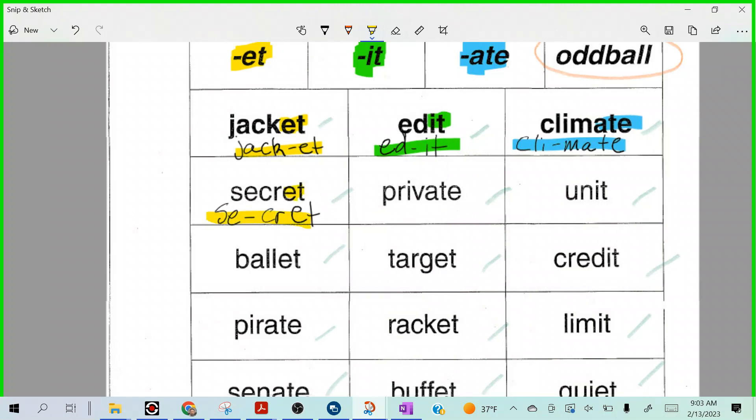All right. Ready? Private. Private. Look where I pick back up. Private. Go. P-R-I split V-A-T-E. That's exactly correct. And what color would that get? Yeah, because it's got the A-T-E ending, even though when you say it, private, it sounds like the I-T ending, doesn't it, Nathan? Right?